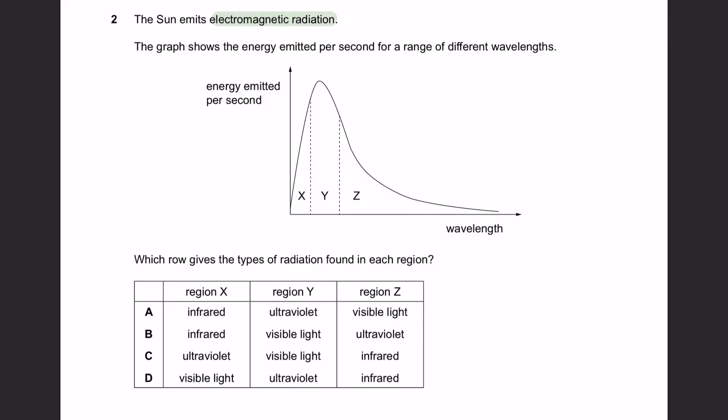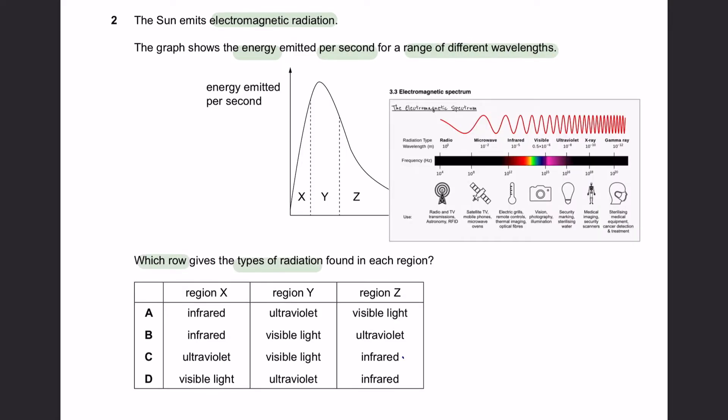Question 2. The Sun emits electromagnetic radiation. The graph shows the energy emitted per second for a range of different wavelengths. The electromagnetic spectrum tells us that the energy emitted increases from radio wave to gamma ray. From this graph, we can see that at X it has the highest energy emitted per second. Between infrared, ultraviolet and visible light, ultraviolet has the highest energy emitted. So the answer for region X should be ultraviolet, followed by visible light at Y, then infrared. So the answer is C.